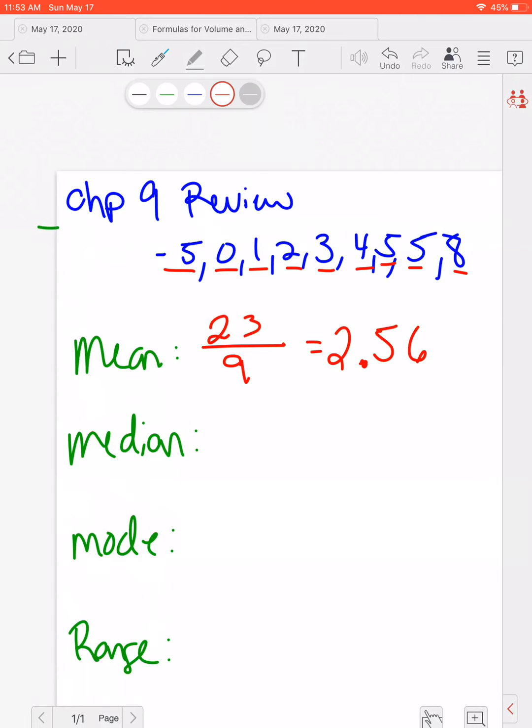The median is finding the middle number after they're already put in order, which these are put in order for me. So I'm just going to rewrite them down here in a different color. So we have negative 5, 0, 1, 2, 3, 4, 5, 5, and 8.